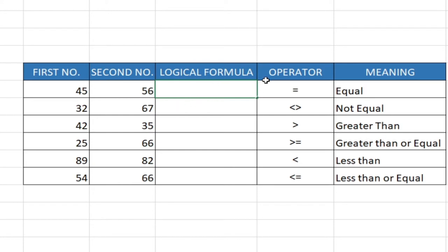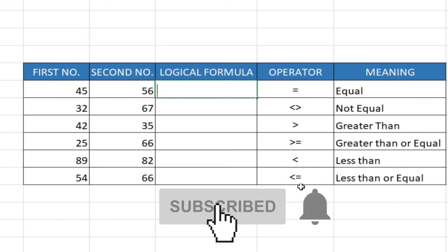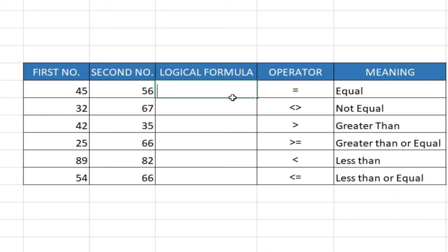We have some comparative operators and I've given some meaning to them — equal to, less than, greater than, less than or equal to, and so on. We want to look at how we can use this logical test to display the output of whether it's going to be true or false in this column, based on the two numbers we have. We're going to use the comparative operators to do that.